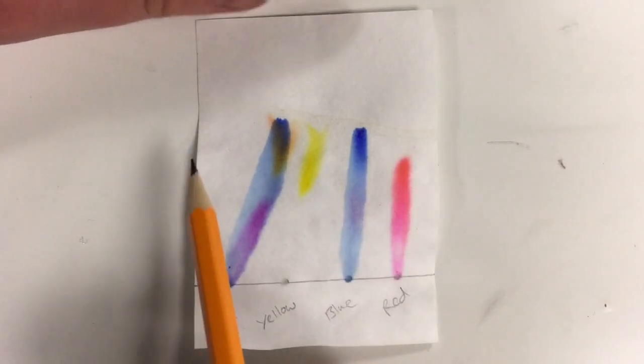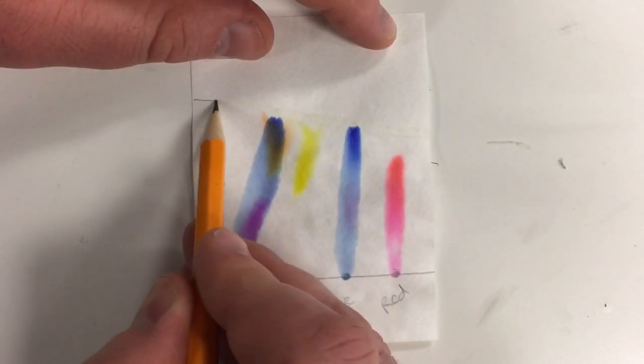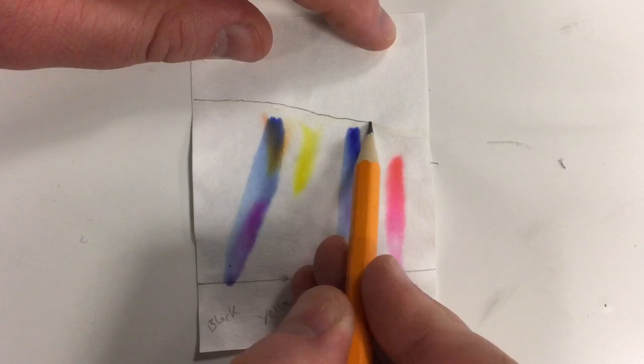Using a pencil you should now label your solvent front. This is the point at which the water solvent moved up the paper and stopped.